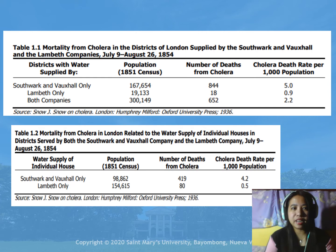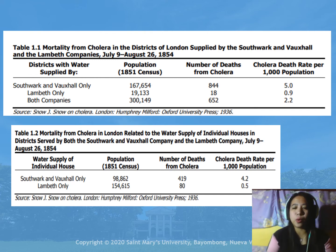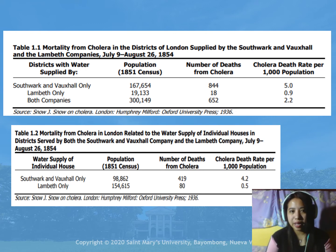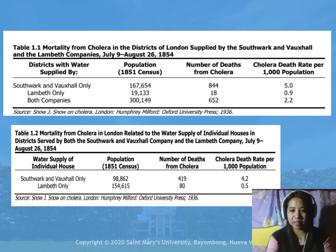This is the second investigation conducted by John Snow, wherein he considered two water supplies. Table 1.1 and Table 1.2 show the mortality from cholera in the districts of London supplied by two companies. With this study, he was able to show that water is a vehicle for transmitting cholera, and that epidemiological information could be used to direct prompt and appropriate public health action.